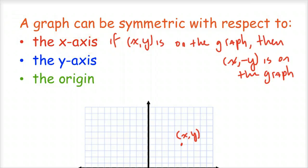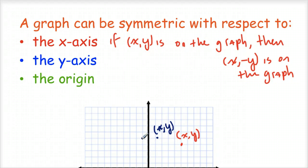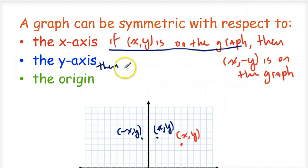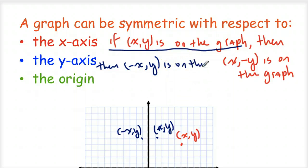Similarly, if we're talking about the y-axis: if I have the point (x, y), then the mirror image is going to have the opposite value of x while the y value stays the same. So if (x, y) is on the graph and it's symmetric with respect to the y-axis, then (-x, y) is also on the graph.